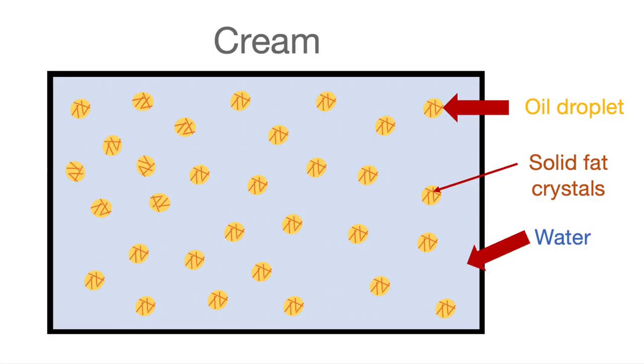We're going to start talking about cream, which remember is that oil-in-water emulsion — it has oil droplets held within the water phase. Those oil droplets in the cream actually contain some solid fat as well, or fat crystals. That's what I'm trying to show in those yellow droplets; those orange lines represent solid fat crystals. We will need these crystals later when we're making butter, so it's super important that there is liquid oil but also some solid crystallized fat.